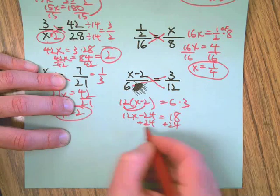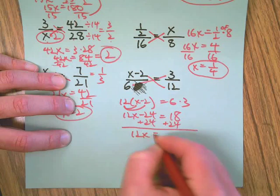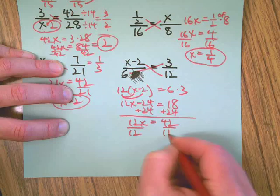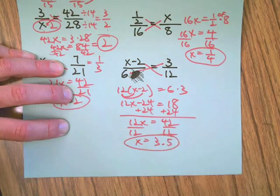6 times 3 is 18. Distribute the 12 so we have 12 times X and 12 times negative 2. Make a zero out of the 24, but to legally do that in most states you have to do it to both sides. Then it looks the same as the other problems. Divide both sides by the coefficient of X and we get 3.5. Done with that one.